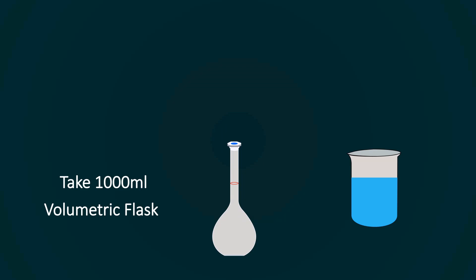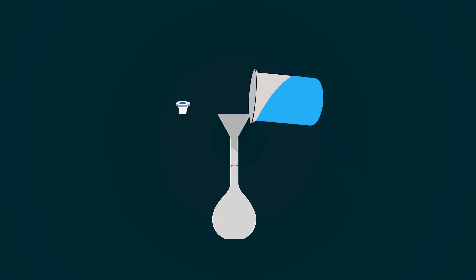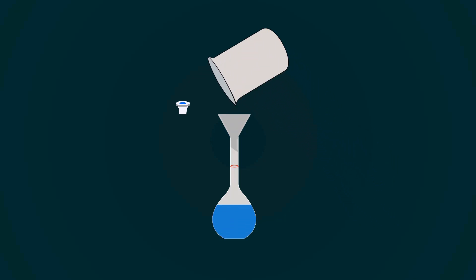Now take a volumetric flask of 1000 milliliters and put funnel on the top of flask. Pour all the solution into the volumetric flask.